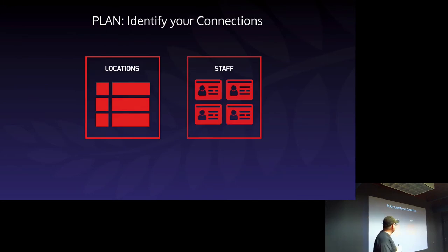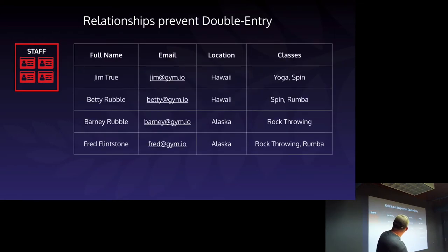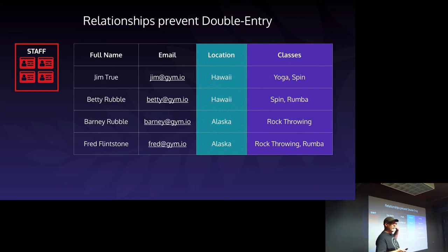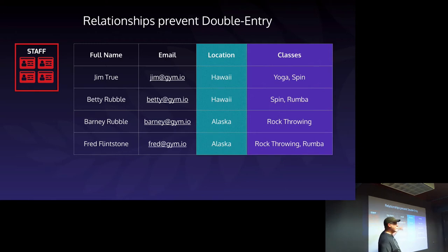Now we're going to identify our connections between our data. We have our locations page and our staff page. Relationships are designed to prevent double entry. If you've worked in a spreadsheet and you're entering data into a kind of database, you want to track little pieces of information to make it easier. We've got names and email addresses — but notice we're repeating location names and class names across multiple records.